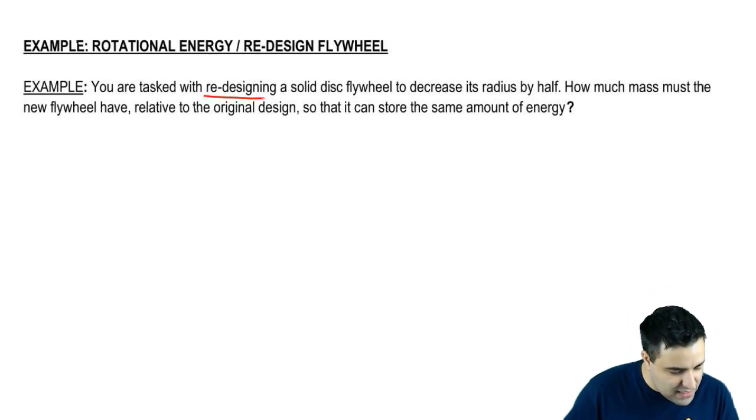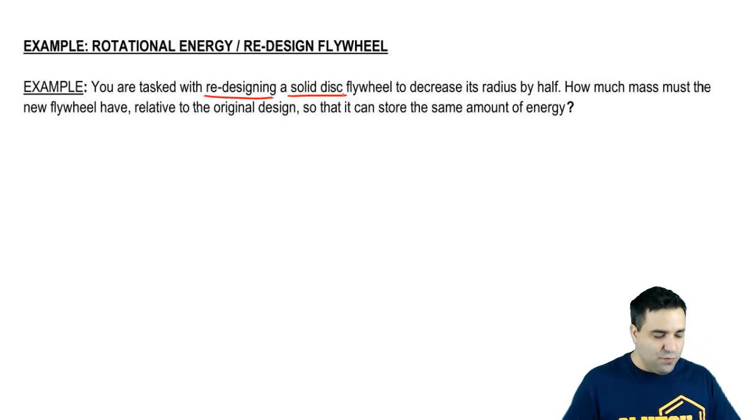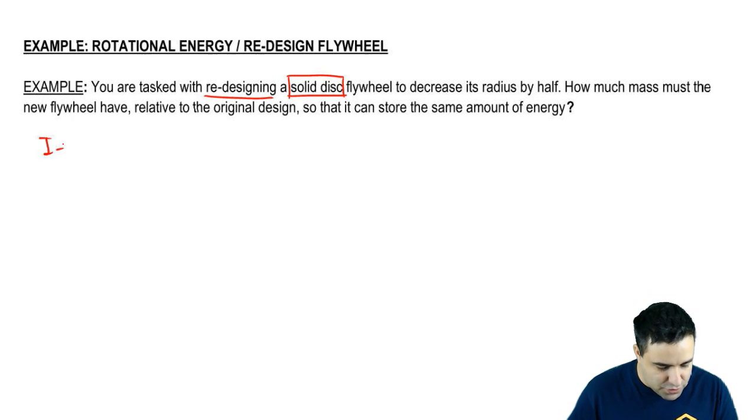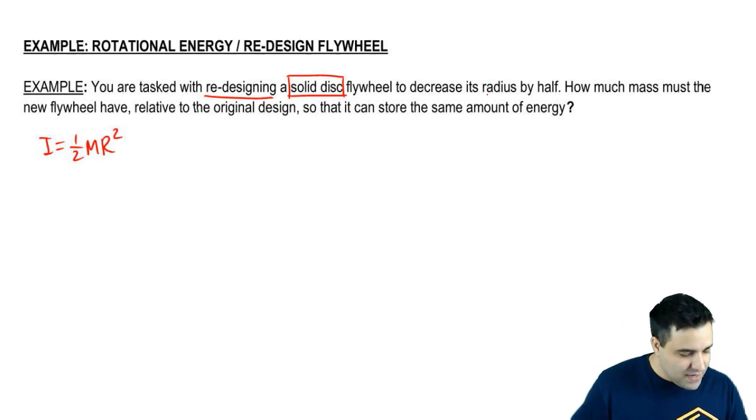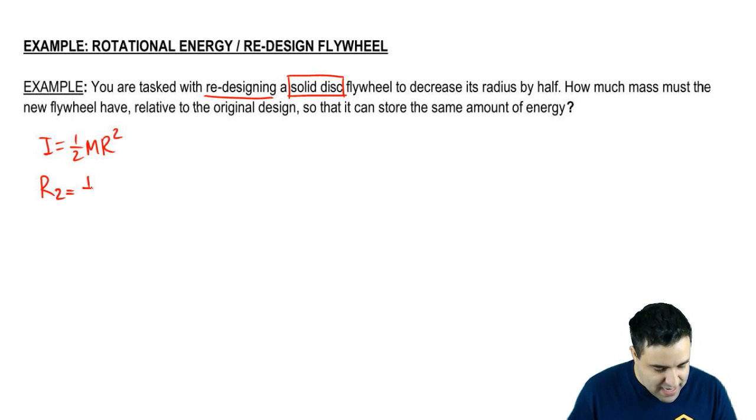So it says you're tasked with redesigning a solid disk flywheel and you want to decrease the radius by half. So first things first, solid disk means that the moment of inertia is half mR squared. That's the equation for a solid disk or solid cylinder. And you want the new radius, I'm going to call this R2, to be half of R1.